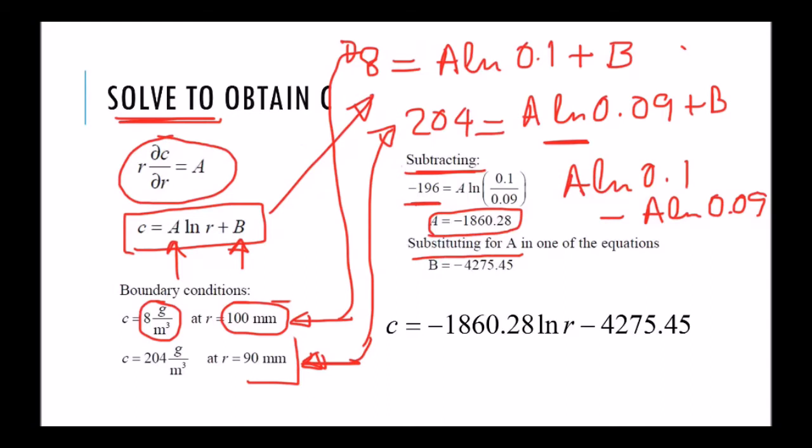So my final concentration profile is given by this. This is a concentration profile because it's C as a function of radius.